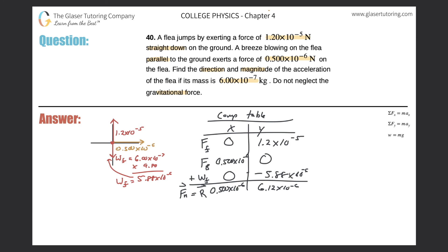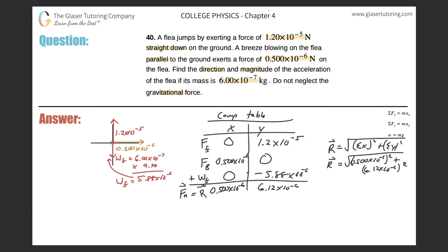Now we can find the resultant vector using: resultant = √(ΣFx² + ΣFy²). So the resultant equals √[(0.500×10⁻⁶)² + (6.12×10⁻⁶)²], which gives us 6.14×10⁻⁶ N. That is the net force on the flea.